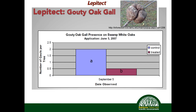Here's a pest that can be difficult to control — gaudy oak gall, caused by a small stinging wasp. Looking at the presence of wasp galls on swamp white oaks: the application is made at the beginning of June, data reported end of September. We can see an average of two galls per oak on untreated controls versus about half a gall per oak on treated trees. A difficult pest to control, and here we have some efficacy using one application of Lepitech applied at the appropriate time.